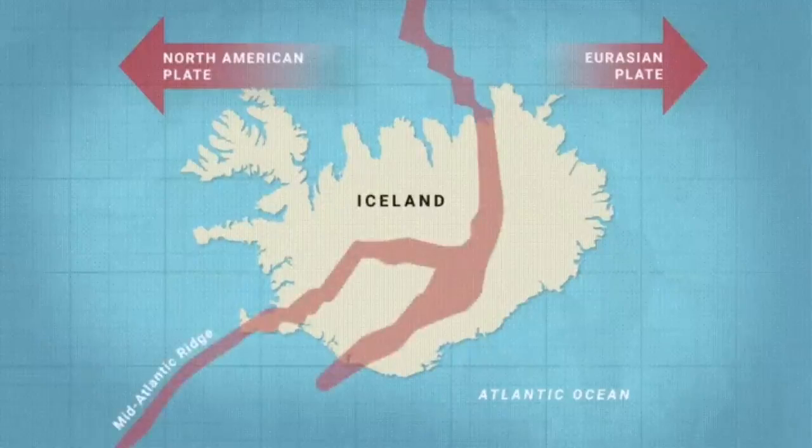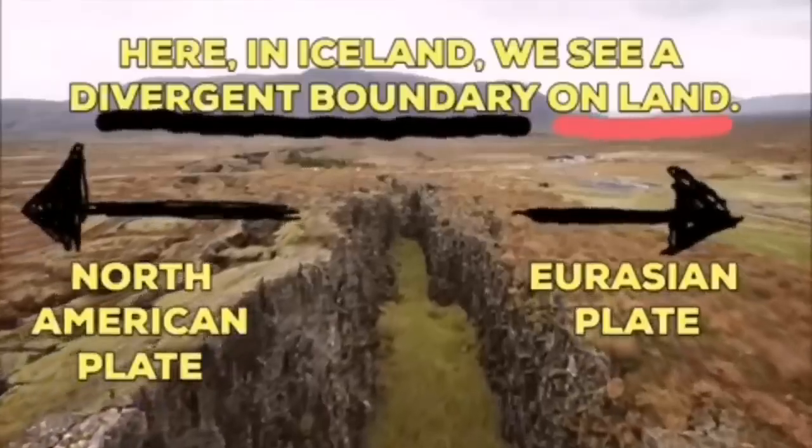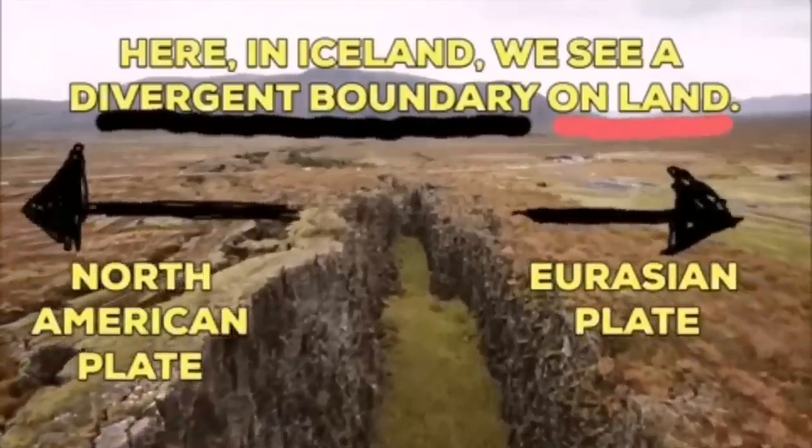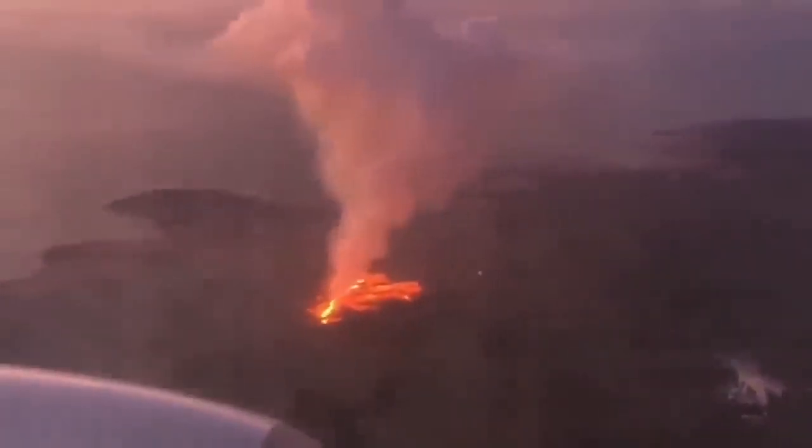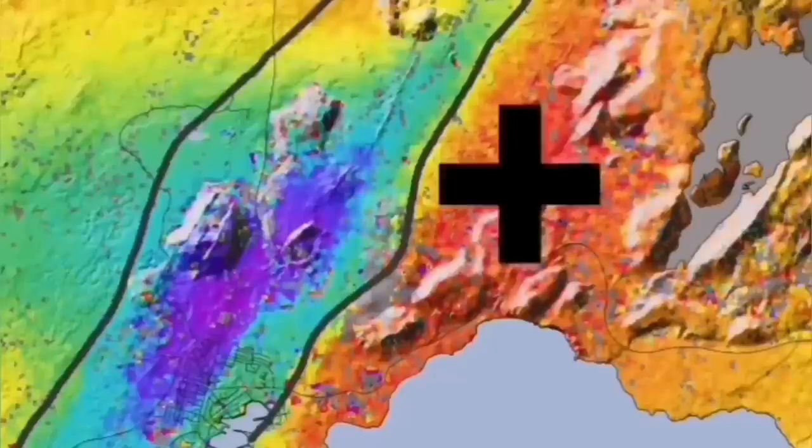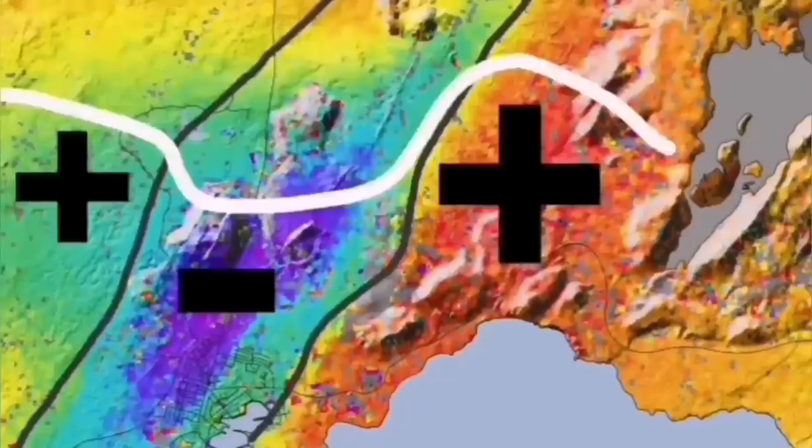This happens in Iceland on land where we can see it. The Eurasian plate and North American plate are separating through these grabens—the hollows you see in the middle. Through them, magma forms and rises and creates lava, the eruption of the volcano.